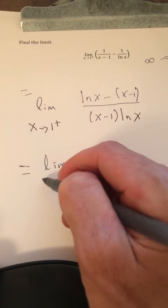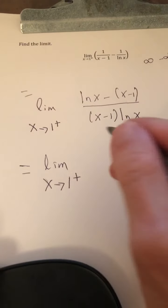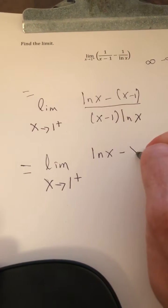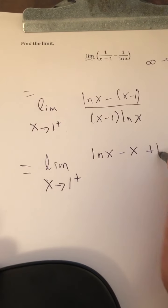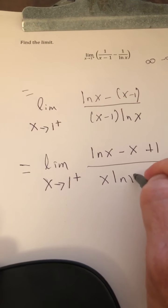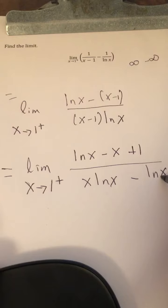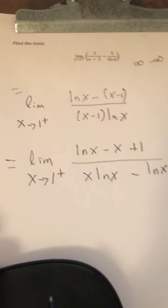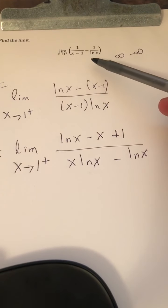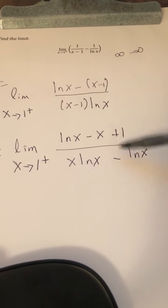We're not doing calculus yet. x approaches 1 on the right of the natural log of x minus x plus 1 all over x L'n x minus L'n x. So what we've done is we've rewritten our indeterminate difference as an indeterminate quotient.